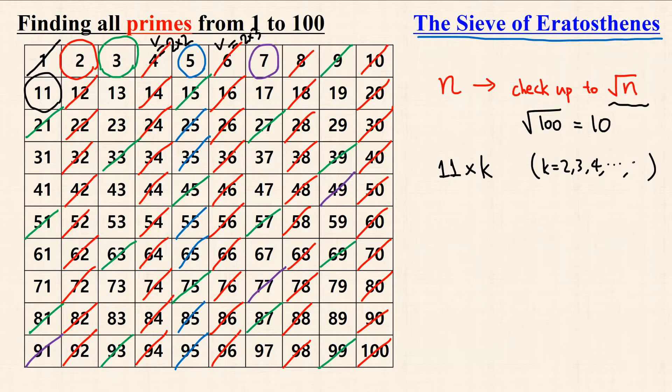But here, the multiples where k equals 2, 3, 4, and up to 10 are already deleted when we were checking the multiples of 2, 3, 4, etc. and 10.